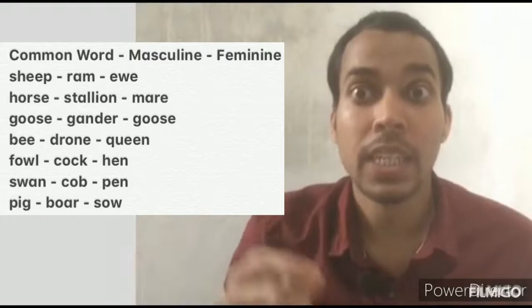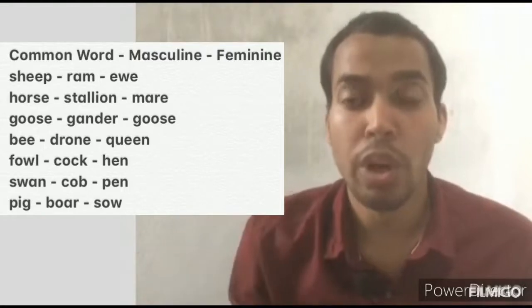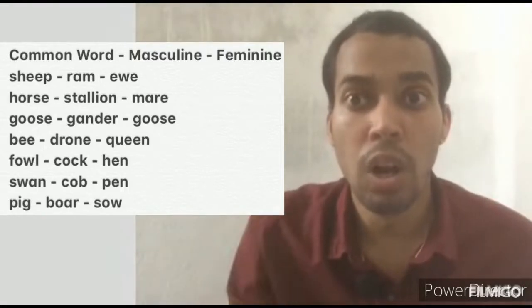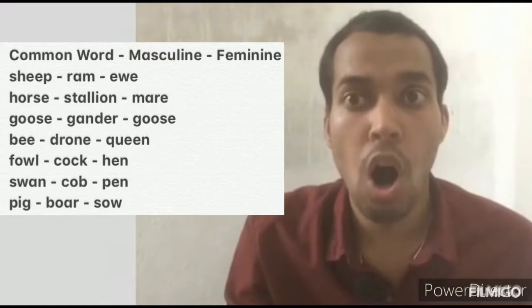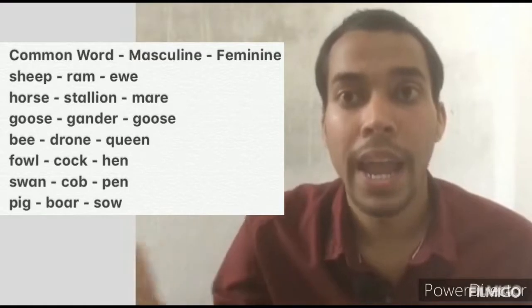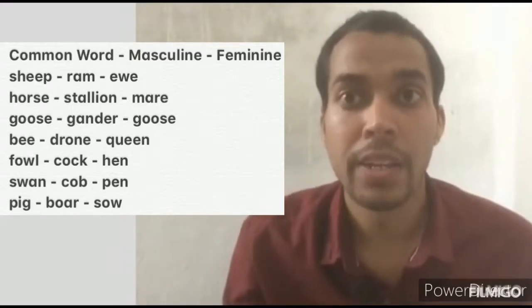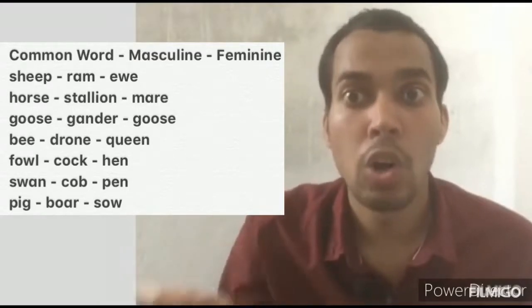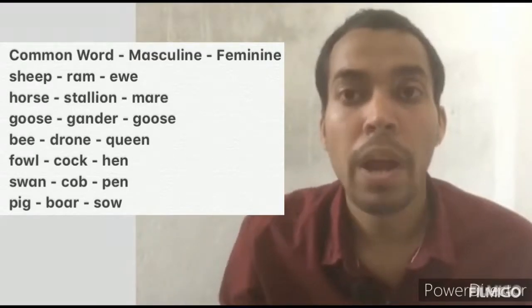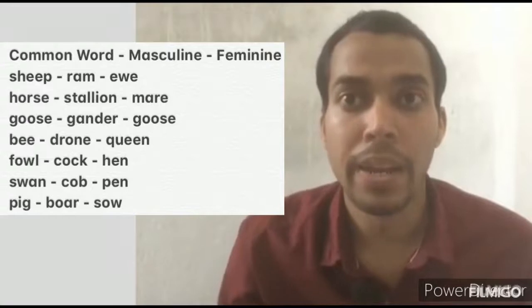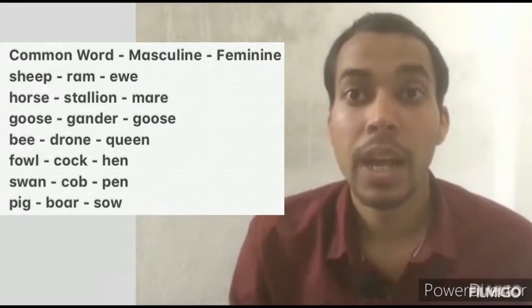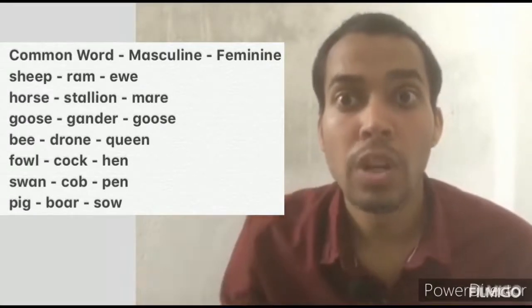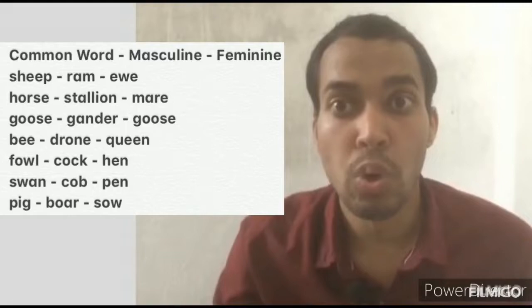Bee — drone, queen. Fowl — cock, hen. Swan — cob, pen. Pig — bull, sow.